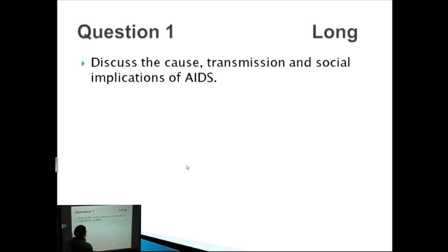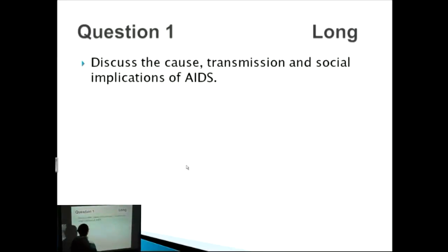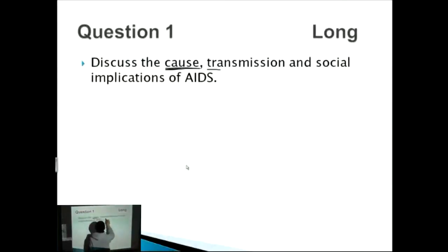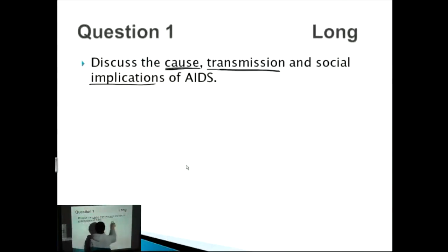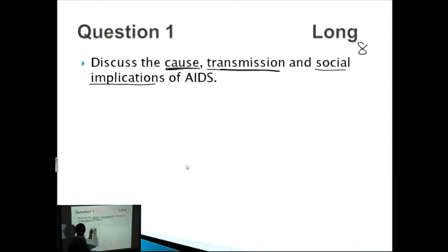We're now going to talk about infectious disease. These long answer questions can be a bit tricky. When I first looked at this question — 'discuss the cause, transmission, and social implications of AIDS' — I thought it was one of the hardest ones. It's actually one of the easier ones because it breaks it down for you: cause, transmission, social implications. All together you're looking for about eight points.